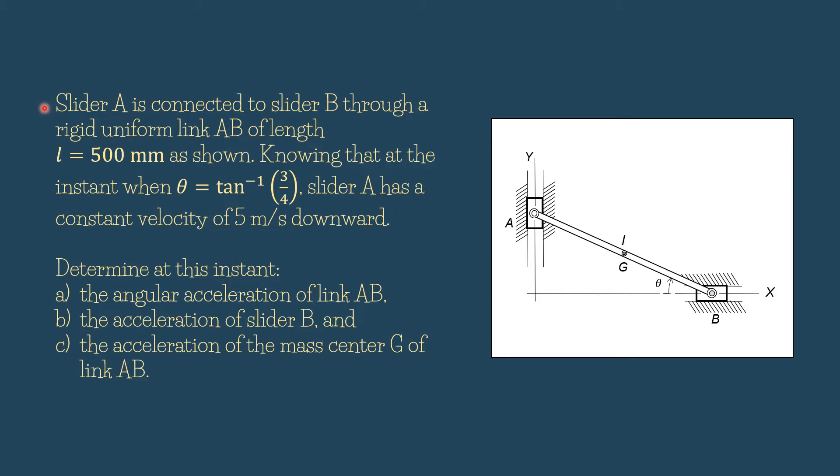Slider A is connected to slider B through a rigid uniform link AB of length L equals 500 mm as shown. Knowing that at the instant when theta equals tangent negative one of 3 over 4, slider A has a constant velocity of 5 meters per second downward.